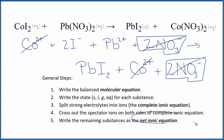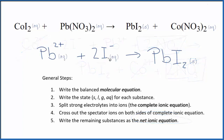What's left is the net ionic equation for CoI2 plus Pb(NO3)2. I'll clean it up and write the states. This is the net ionic equation for our cobalt-2 iodide and lead-2 nitrate.